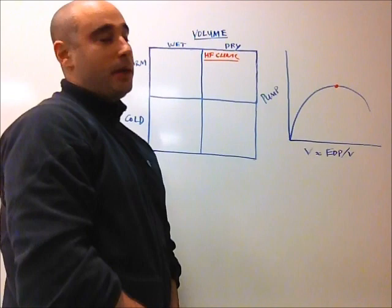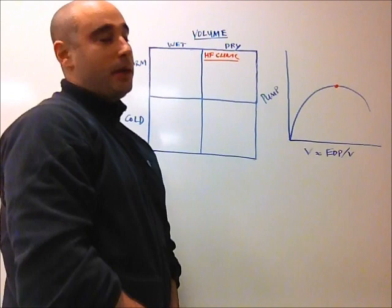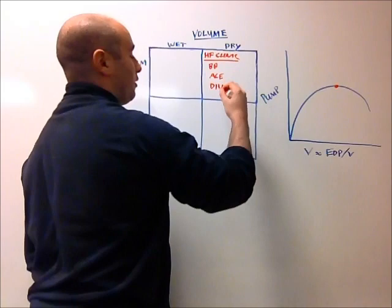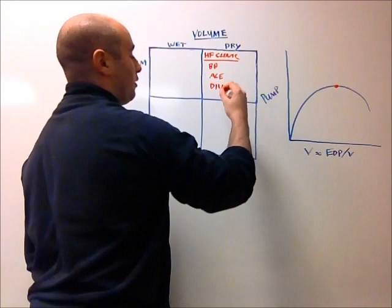They're asymptomatic, they're relatively euvolemic, and they're well-maintained. They generally have a medication regimen that includes a beta blocker, an ACE inhibitor or an ARB, and a standing PO diuretic, although sometimes a PRN diuretic is used as well.